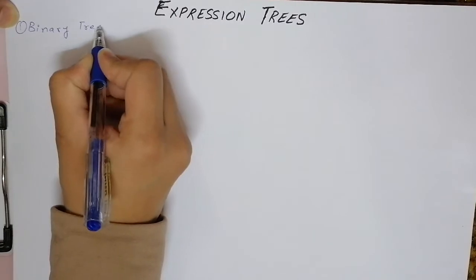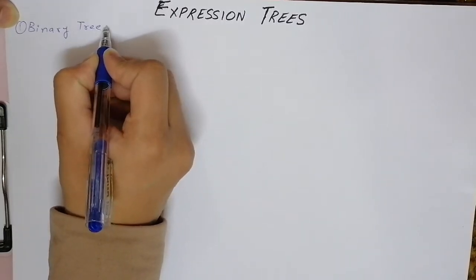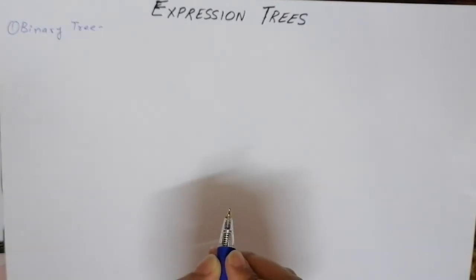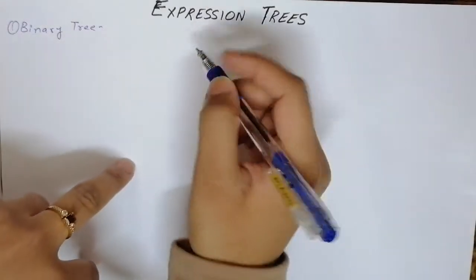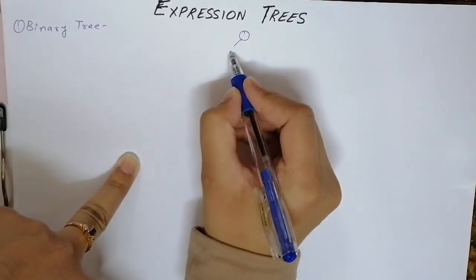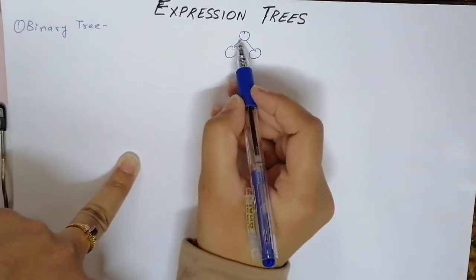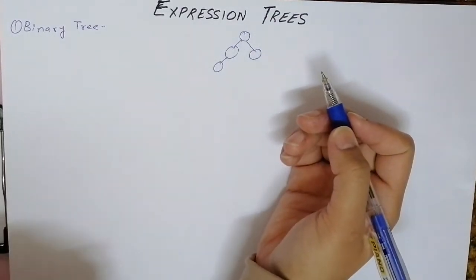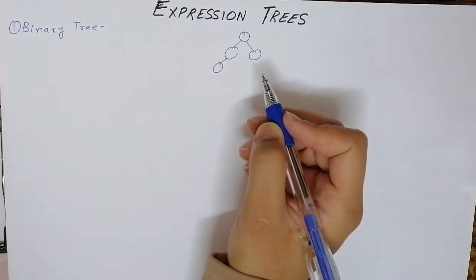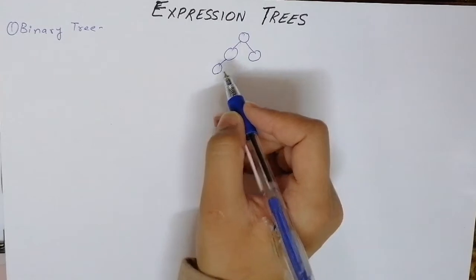The specialized feature of expression trees is that if you have a given mathematical expression or any equation, we can express it in the form of a binary tree. We will see in this lecture how we express an equation in the form of a binary tree. A binary tree is a tree having a certain root and a certain number of children at any node — it may have two children, one child, or no child. We will look in detail at how expression trees fit into this category.